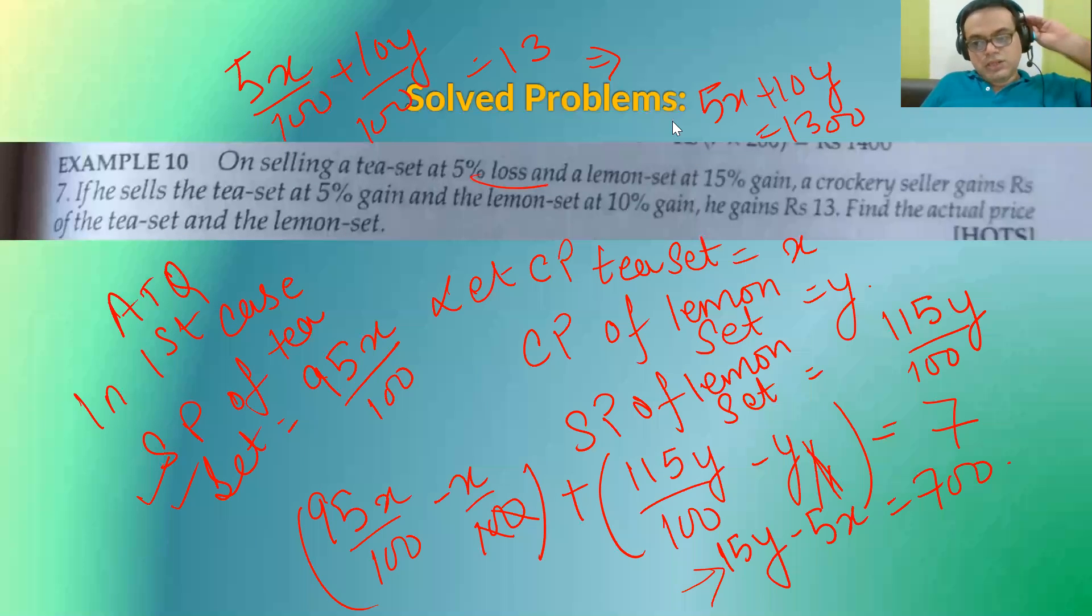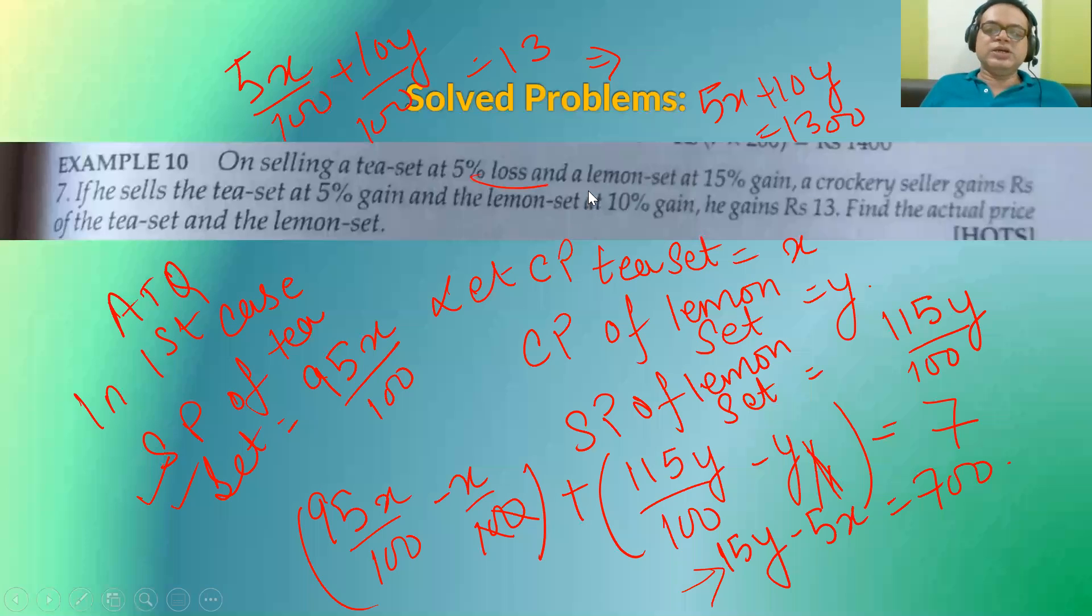Sir, but it's written actual price of the T-set and lemon set. Some people are saying that my voice is not really audible. Just wait. I will be just back. That is perhaps the correct answer. The cost price of this T-set will be equal to rupees 100.